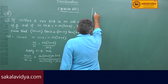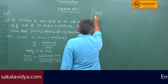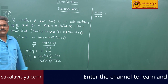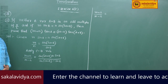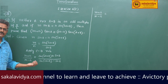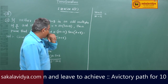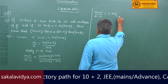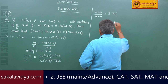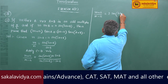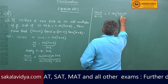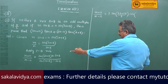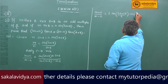Right-hand side: (m+n) by (m-n) equals — using sin C plus sin D equals 2·sin((C+D)/2)·cos((C-D)/2) — we get 2·sin((2A+2B)/2)·cos((2A)/2) in the numerator.